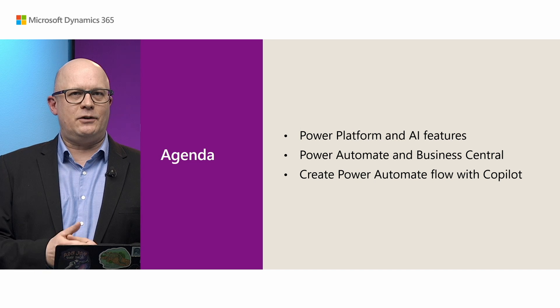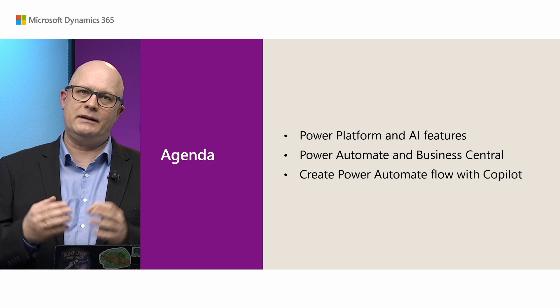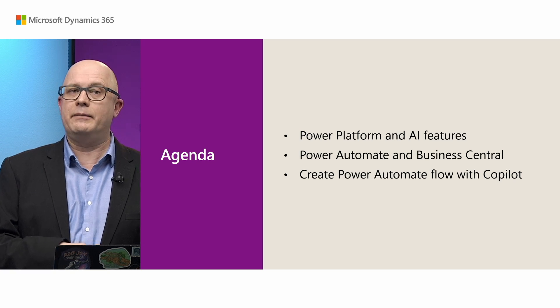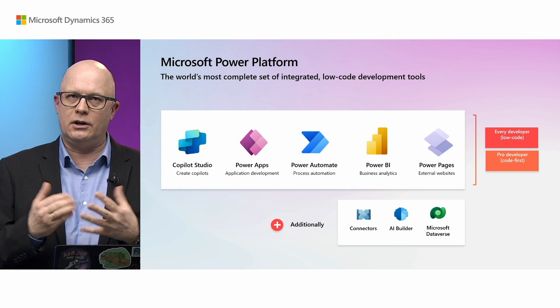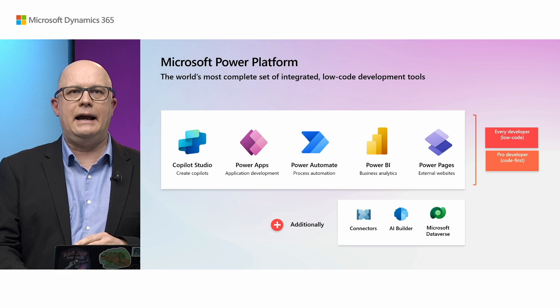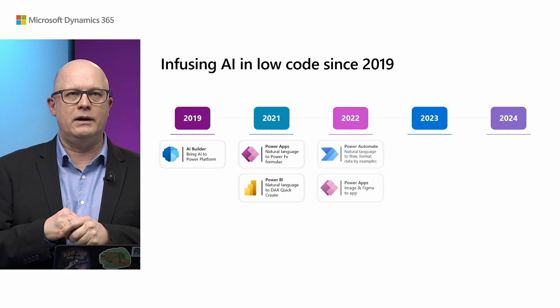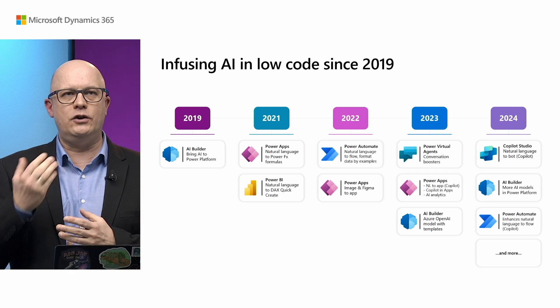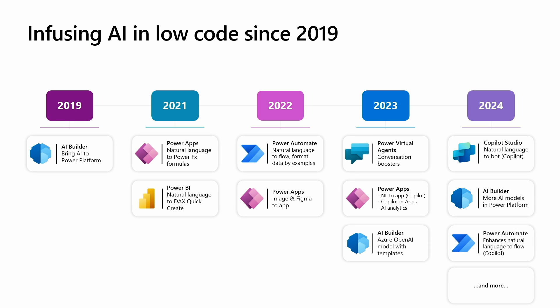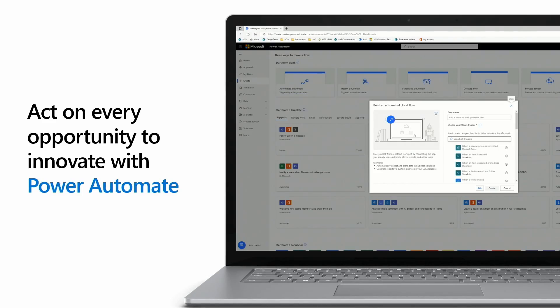I will talk about Power Platform, AI features, and our integration with Power Automate — how you can now use the new capability to create flows. Power Platform already consists of different tools allowing you to build experiences without development, using low-code development tools. It is already infused with AI. Power Platform started adding AI-related features back in 2019, and we have multiple different features and integrations that exist to date. The product we will be looking at in this session is Power Automate, allowing you to build flows and automations.